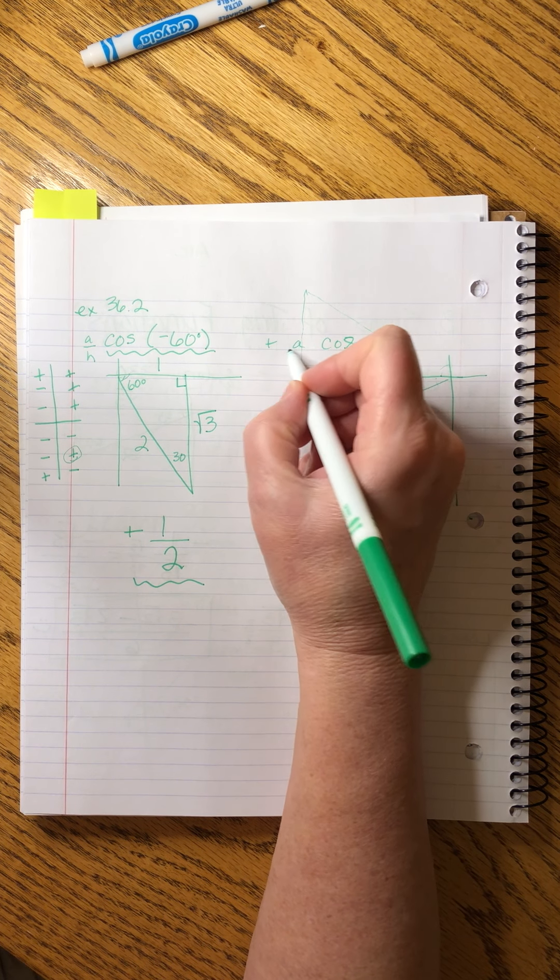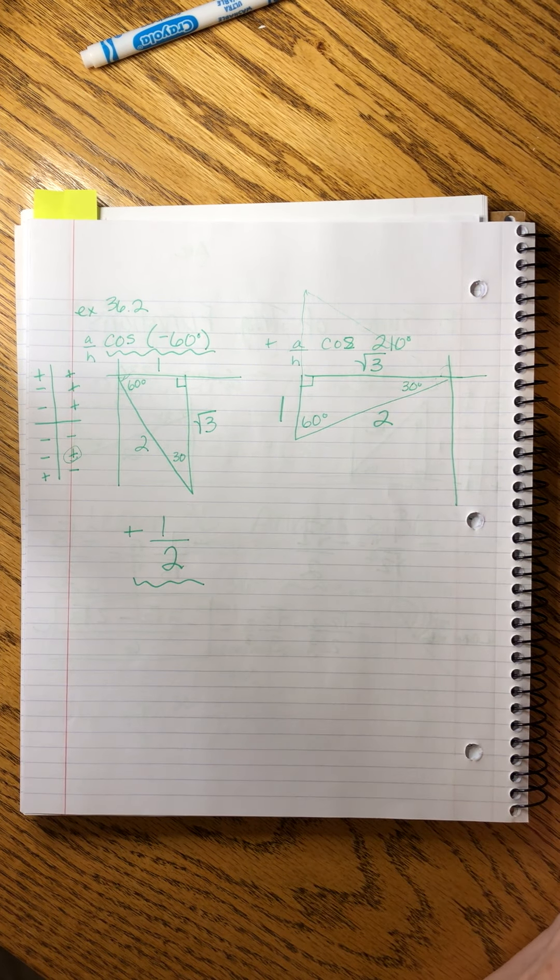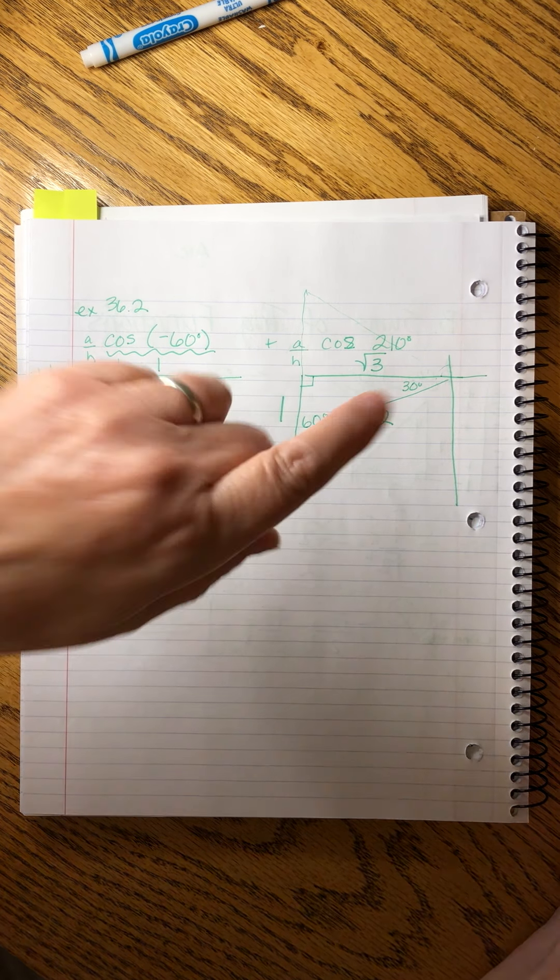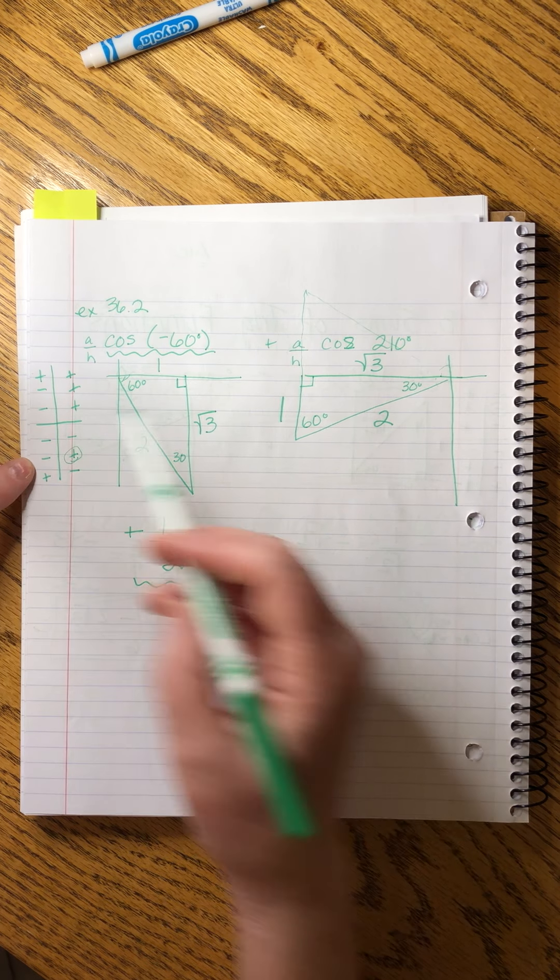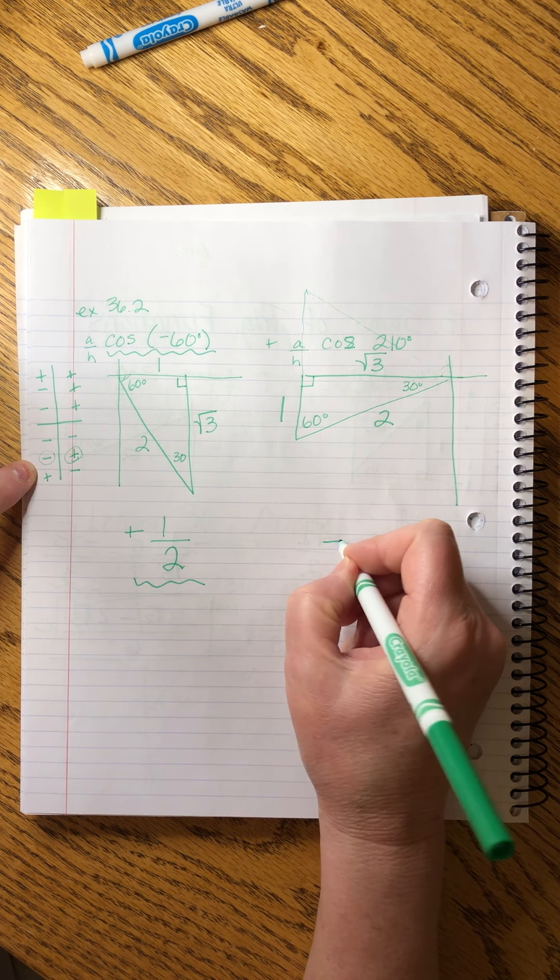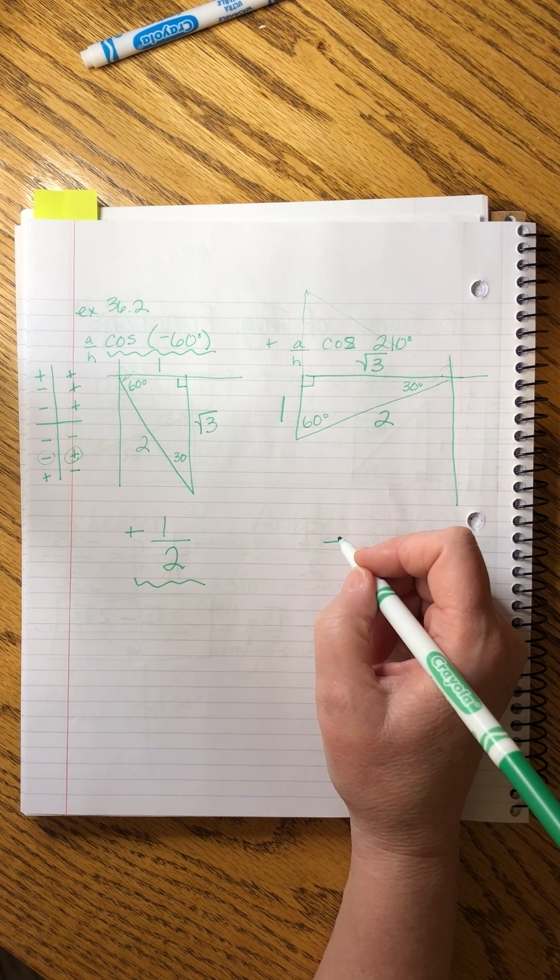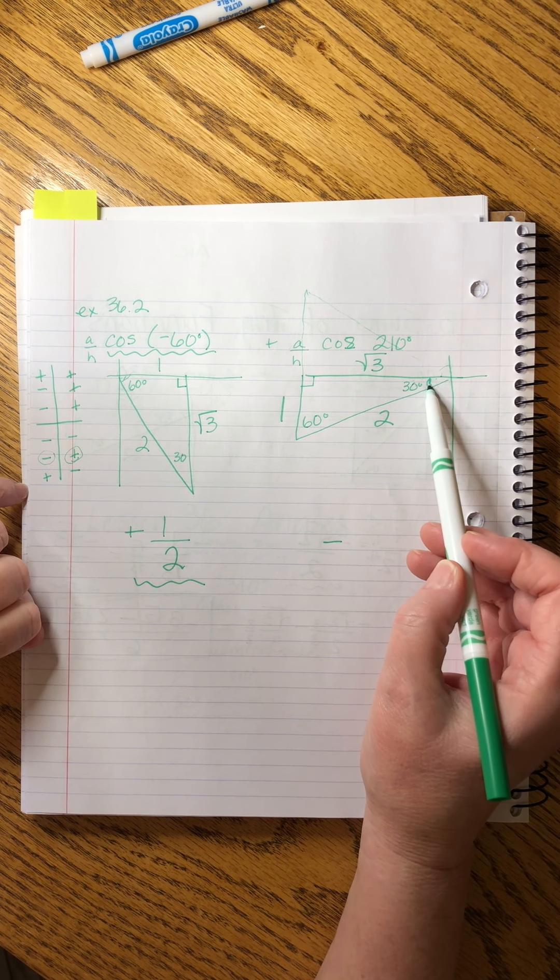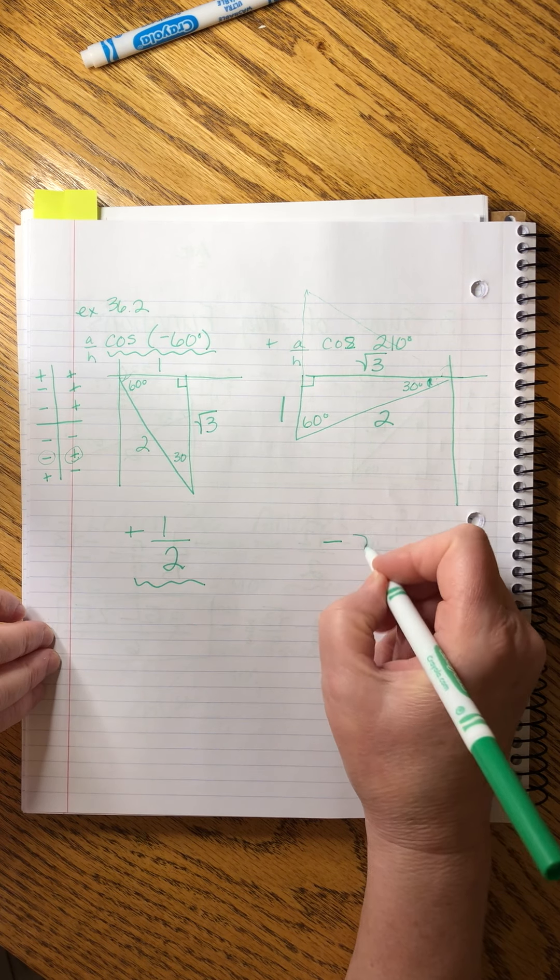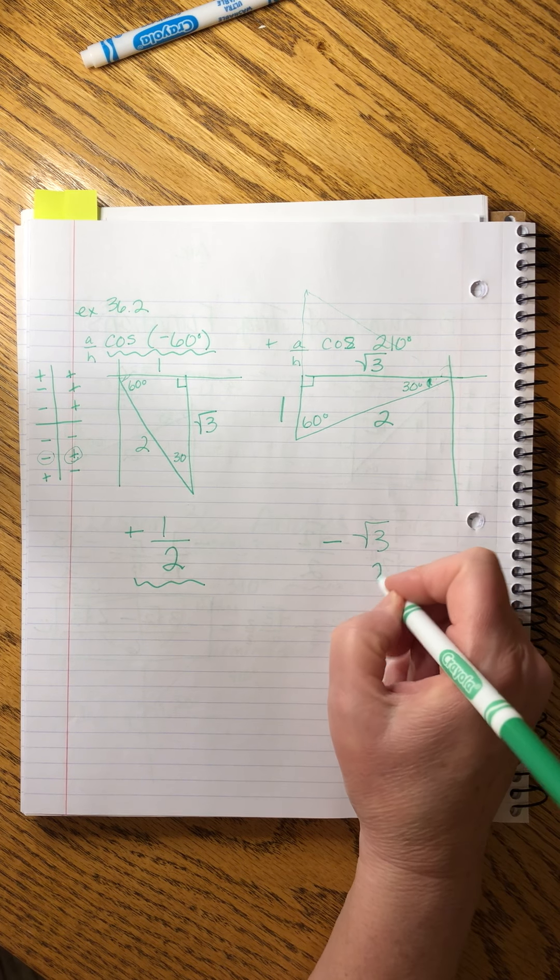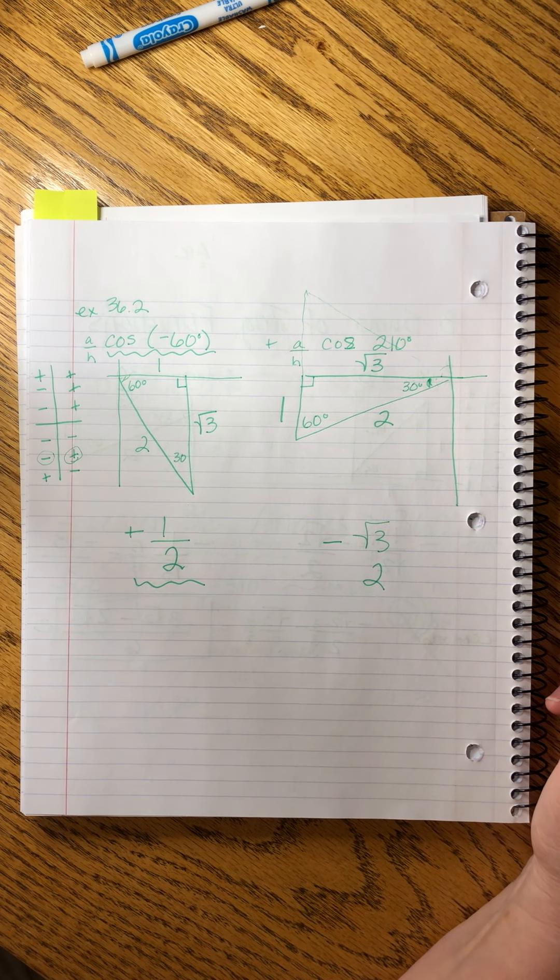Cosine, as I said before, is adjacent over hypotenuse. So I remind myself of which sides I'm trying to gather up. I'm in the third quadrant. So cosine is negative. So I'm going to put that right there. And I want the adjacent side, which is square root of three and the hypotenuse, which is two.